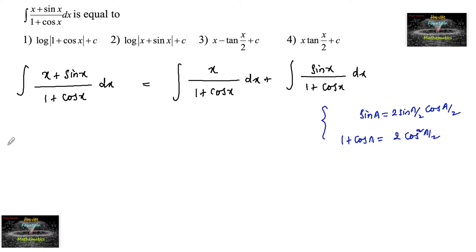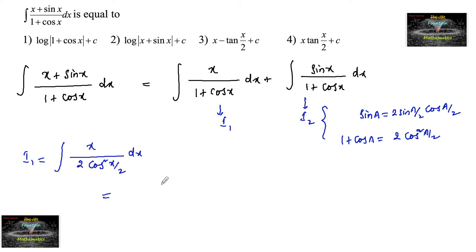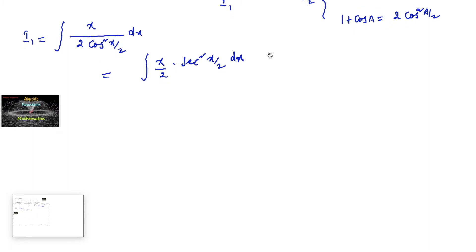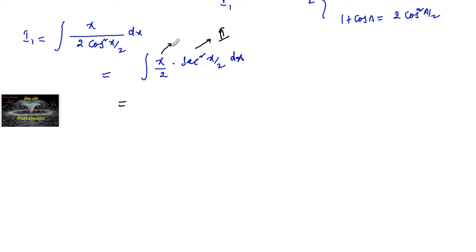Let us call these I1 and I2 and solve them separately. I1 is the integral of x/(1 + cos x) dx. Since 1 + cos x = 2 cos²(x/2), this becomes the integral of x/(2 cos²(x/2)) dx, which equals the integral of (x/2) · sec²(x/2) dx. We apply integration by parts, taking x/2 as the first function since we can easily integrate sec²(x/2).